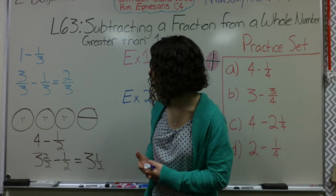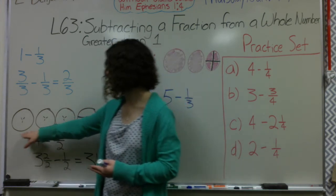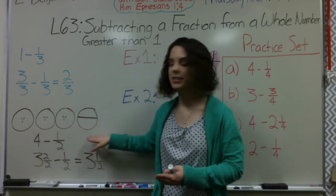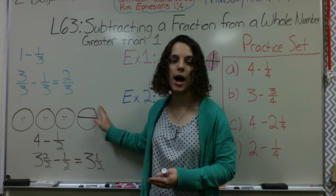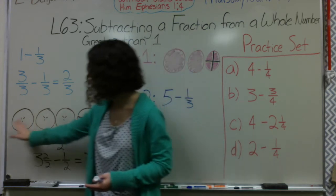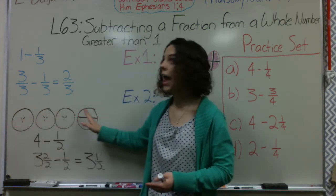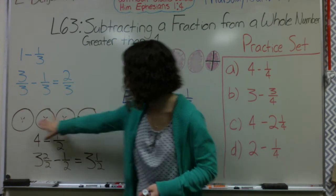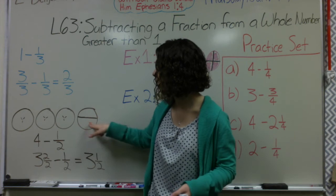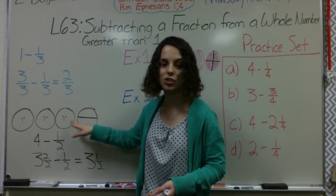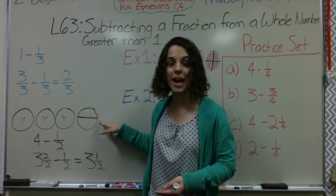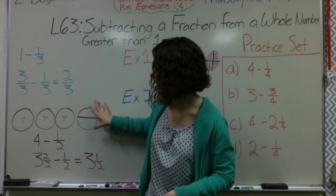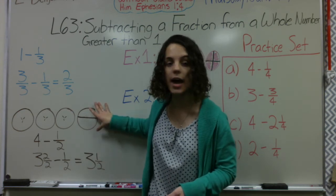We have an example here that we're going to look at together that's at the beginning of our book that has a picture of 4 pies. Now I have 4 whole pies right here and I want to take away half of a pie. So when I start with these 4 whole pies, I have to then take 1 whole pie and split it into halves just like I've done here. I have 1 pie split into halves. So now I still have my 4 whole pies. However,